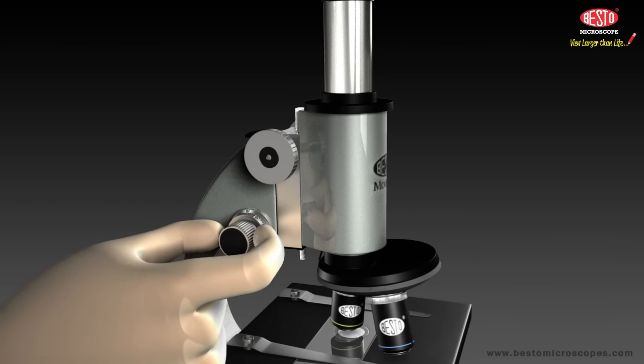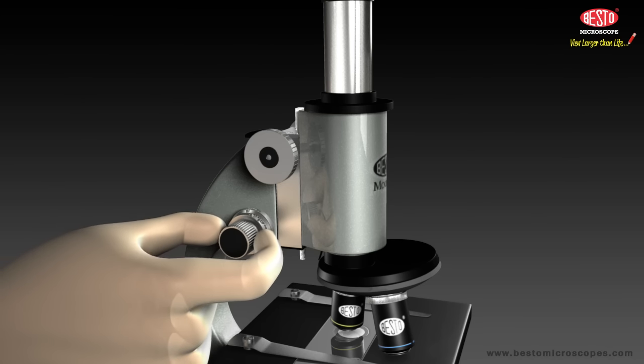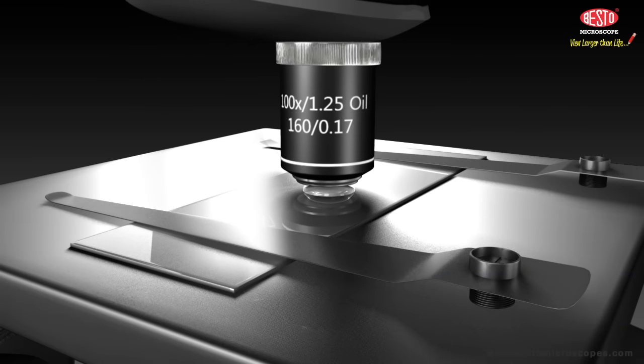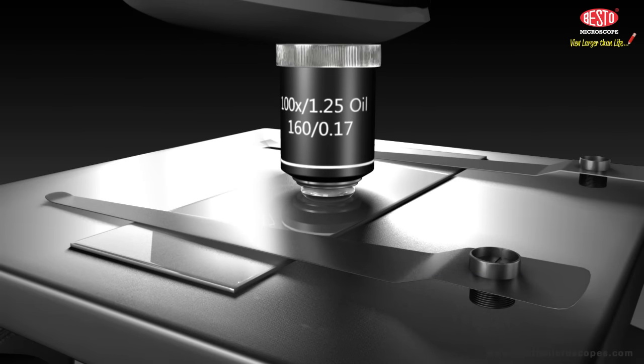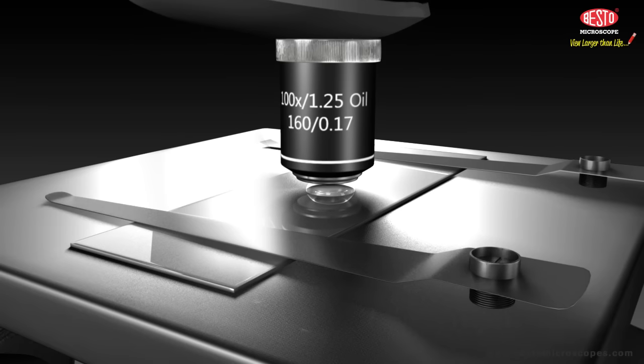Close it until the circle of light dims, and then open it again slightly and stop it where you get maximum resolution of slide or sample in view. Step 11: Medical microscope model Besto 10 have a special type of lens called an oil immersion lens, 100x.